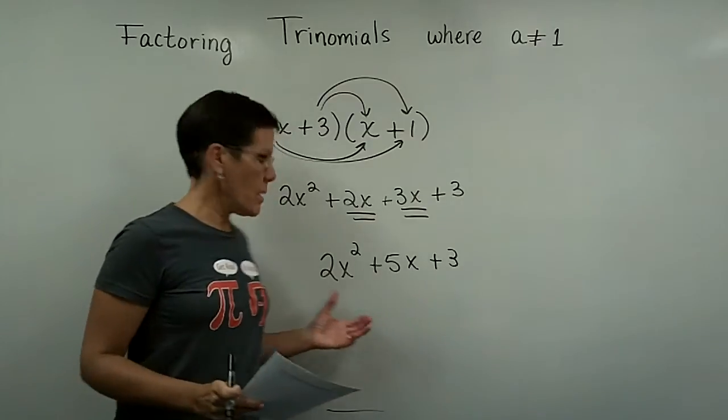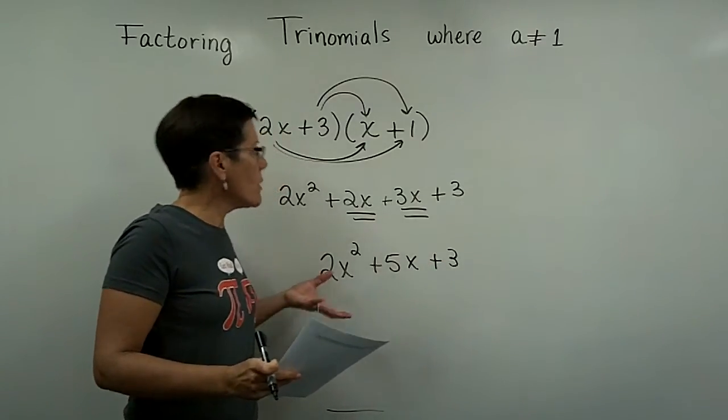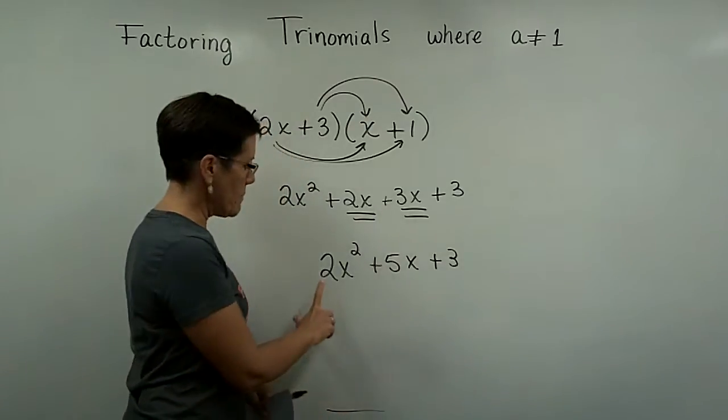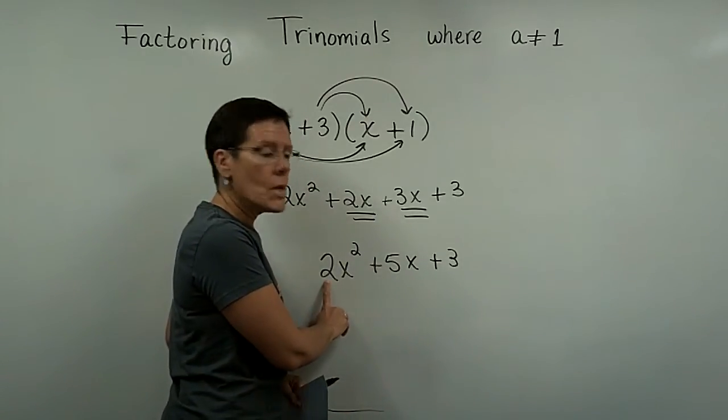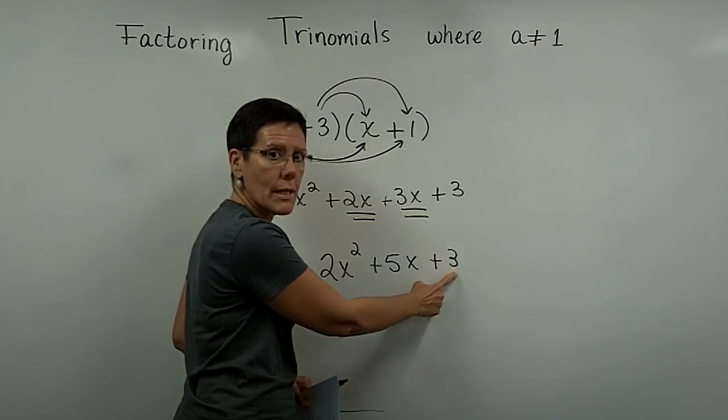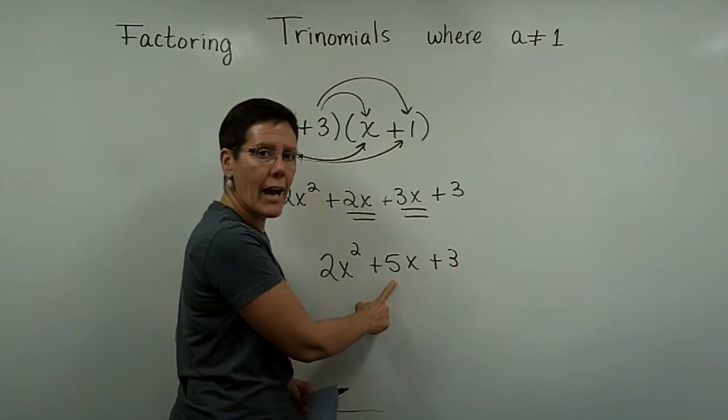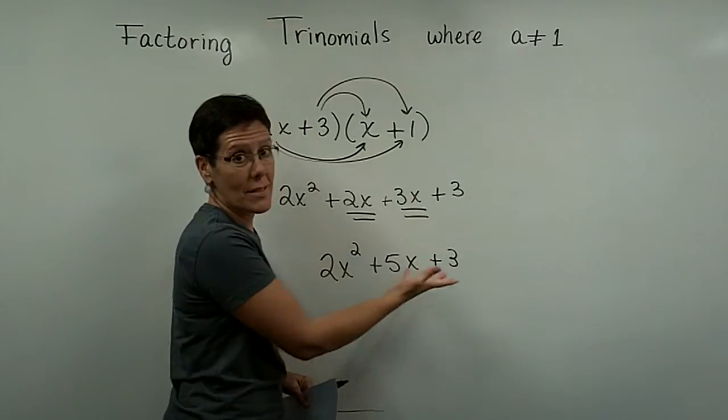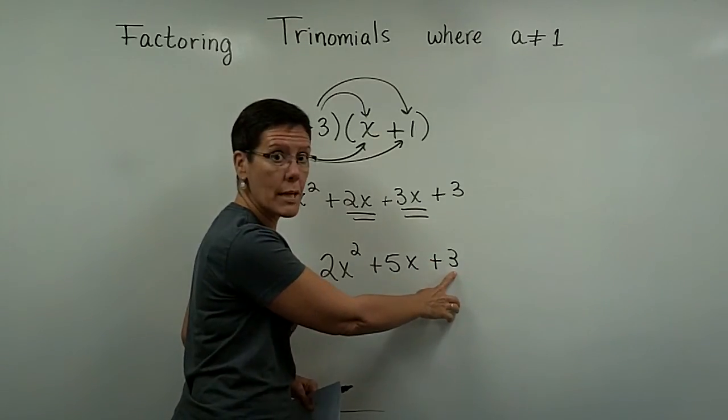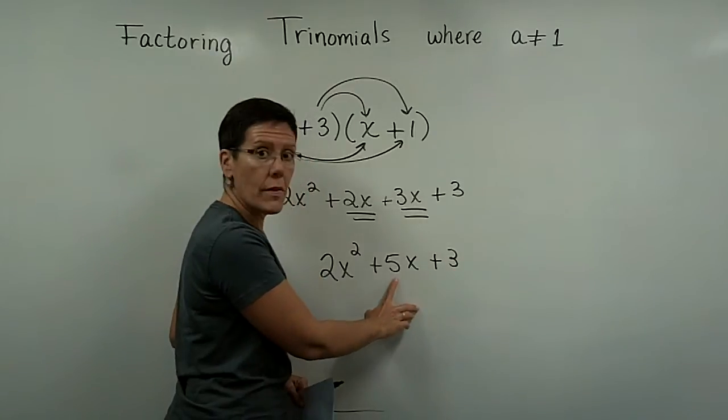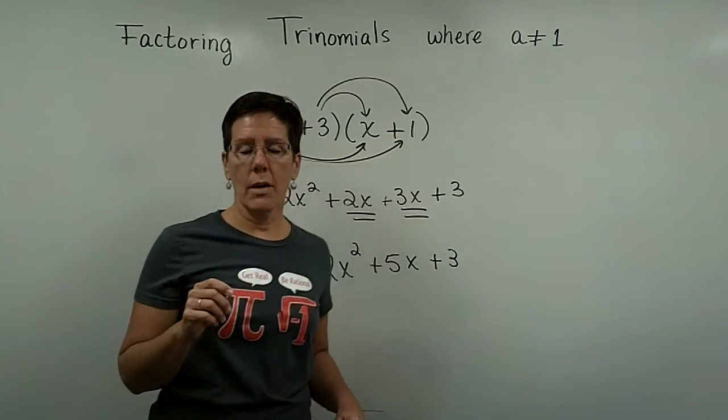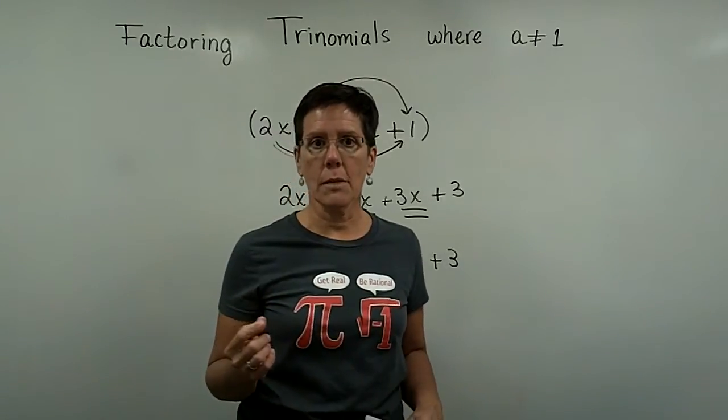My goal now in this clip is to take this trinomial and factor it back into this form. Previously, when this was a 1, all we needed to do was look for two numbers whose product was 3 and it added to be 5. Well, think about this example. There is no such thing. There are not two numbers whose product is 3 and where they add to be 5. So I'm going to share with you now something called the AC method for factoring.